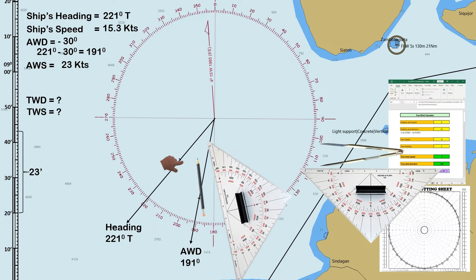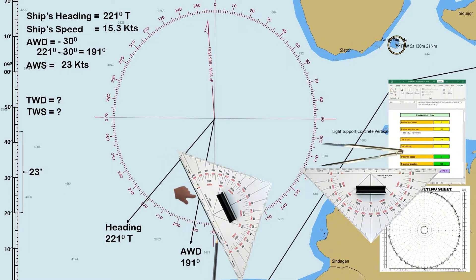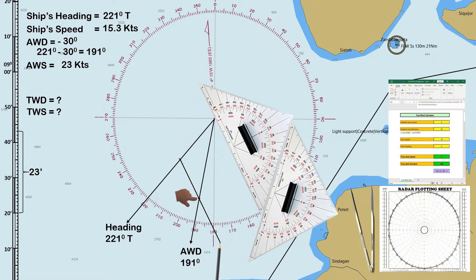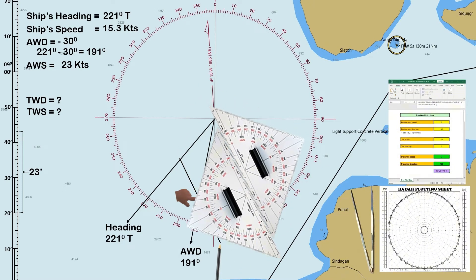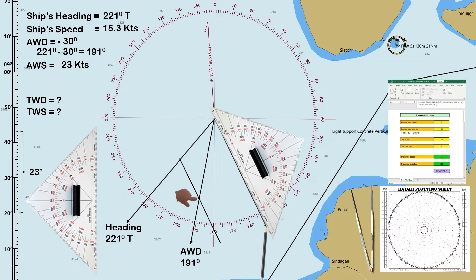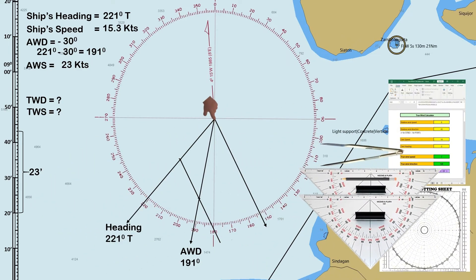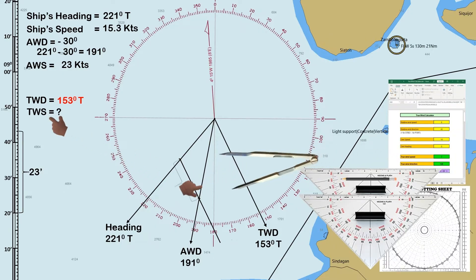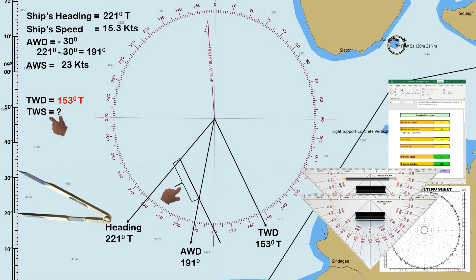Next, connect a line on the plotted speed from the ship's heading to the apparent wind direction. Then drag the triangle to the center of the compass rose and create a parallel line. This is now the true wind direction, which is 153 degrees true. When plotting the true wind direction, always follow the direction starting from the ship's heading towards the apparent wind direction. To determine the true wind speed, measure this distance — the true wind speed is 12 knots.